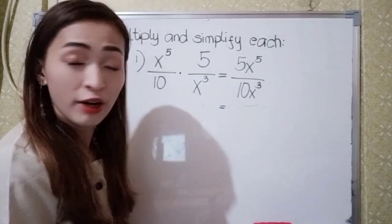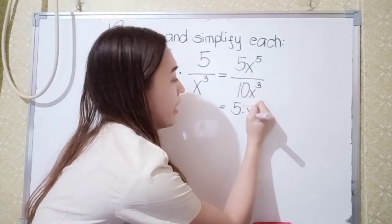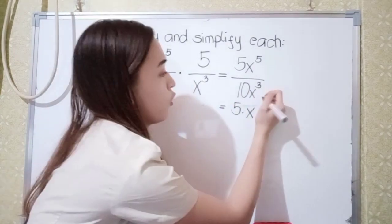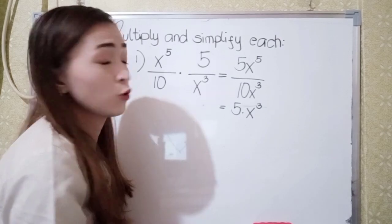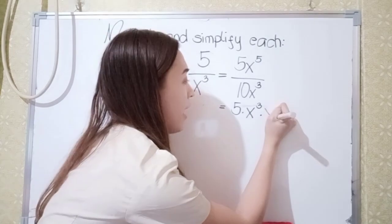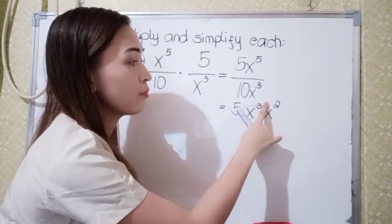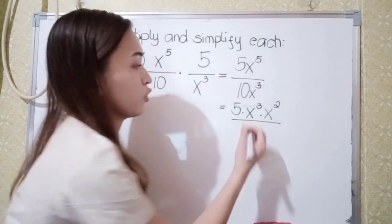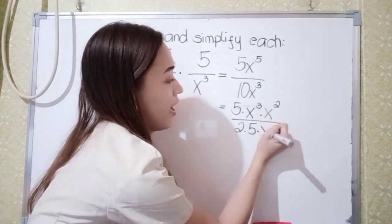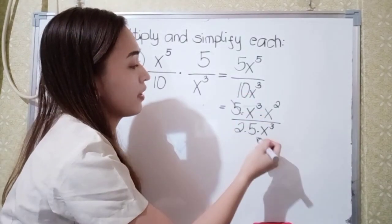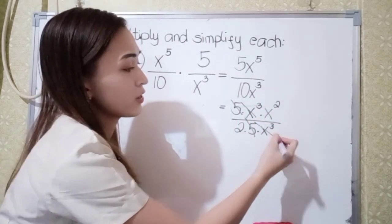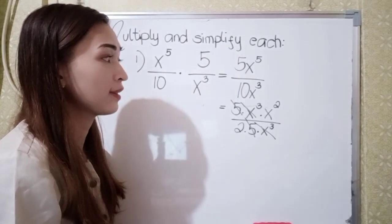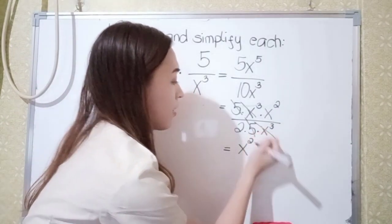So we can simplify 5x to the 5th power over 10x cubed. The factors of 5x raised to the 5th power — since the lowest exponent between x raised to the 5th and x cubed is 3 — one of the factors is x cubed times x squared, because 5 times x cubed times x squared is 5x to the 5th. The factors of 10x cubed are 2 times 5 times x cubed. So 5 divided by 5 is 1, cancel. x cubed divided by x cubed is also 1, cancel. We have x squared over 2.